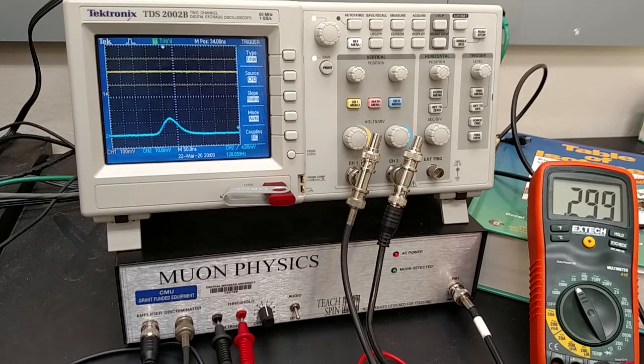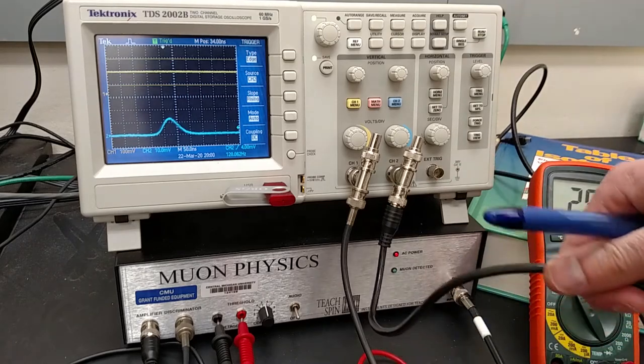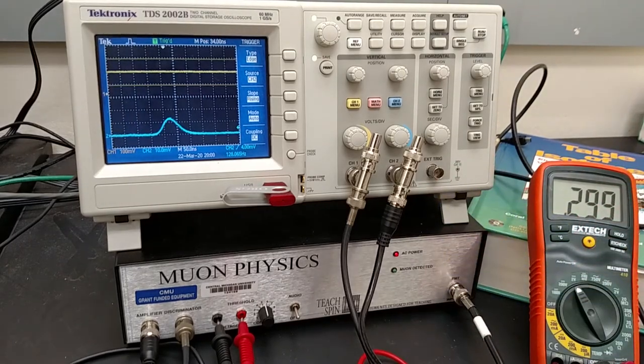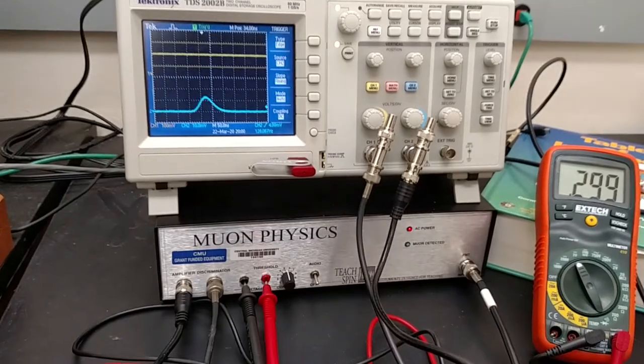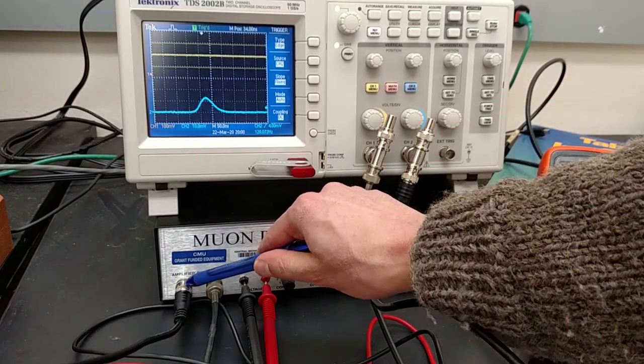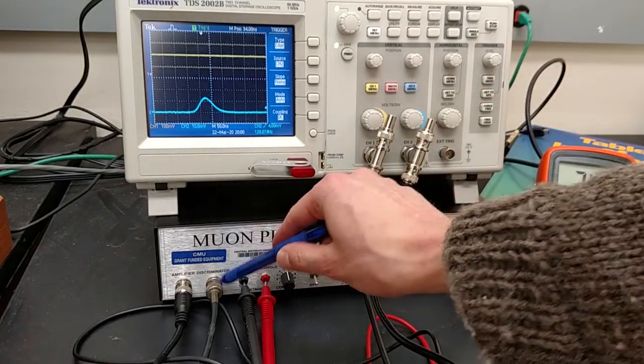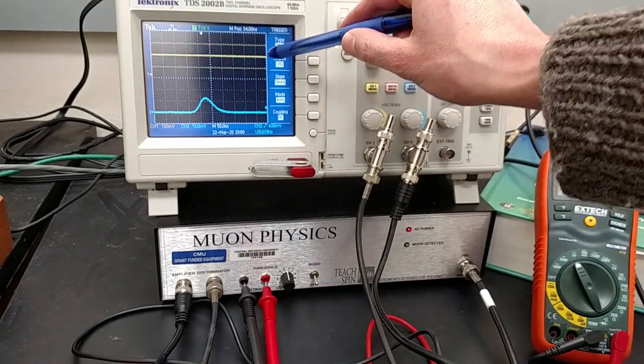The behavior of the threshold of the discriminator. We have in channel 2 the output signal of the amplifier, and going to the first channel, the yellow, is the output of the discriminator.